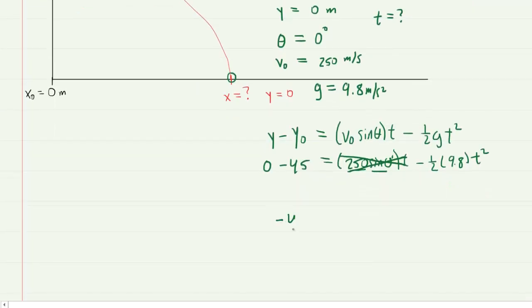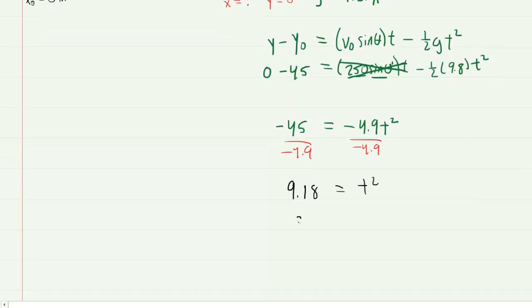The left side is negative 45. We can multiply negative half by 9.8 to get negative 4.9. We will divide both sides by negative 4.9. When we do that, the left-hand side becomes 9.18, and then we'll take the square root. We end up with a time of approximately 3.03 seconds. So this would be the correct answer for part A.